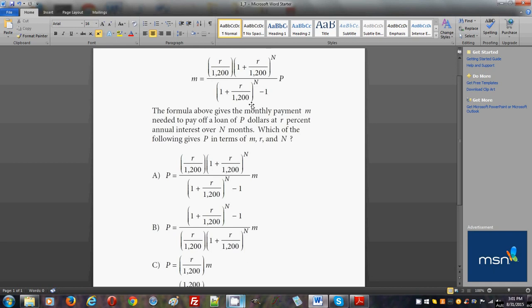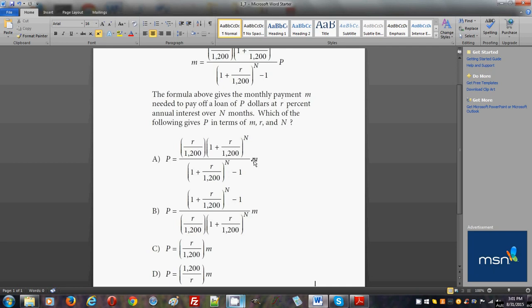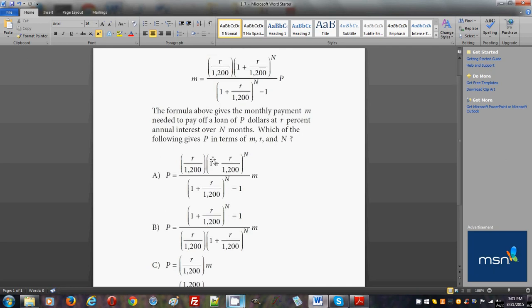We need to find m multiplying this quantity in the denominator. We have m here for choice A, and we have 1 plus r over 1200 to the n, but guess what—where is the minus 1? I don't see the minus 1 multiplied to the m here, so that means this is no good. We can already cross it out.